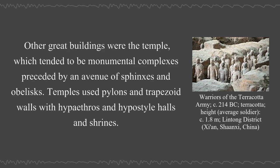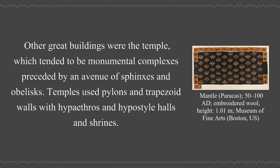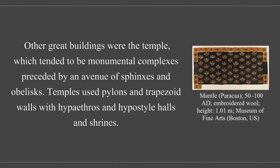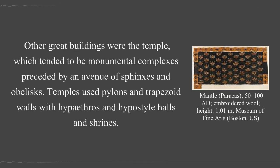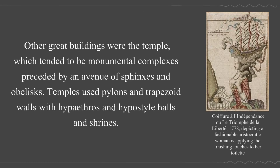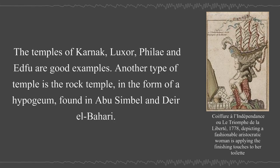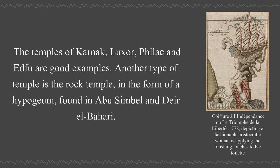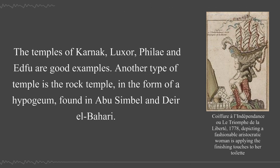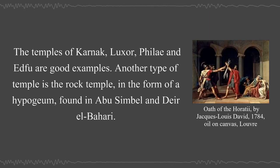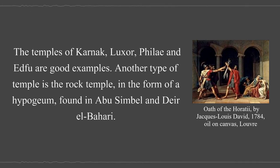Other great buildings were temples, which tended to be monumental complexes preceded by an avenue of sphinxes and obelisks. Temples used pylons and trapezoid walls with hypostyle halls and shrines. The temples of Karnak, Luxor, Philae, and Edfu are good examples. Another type of temple is the rock temple in the form of a hypogeum, found in Abu Simbel and Deir el-Bahari.